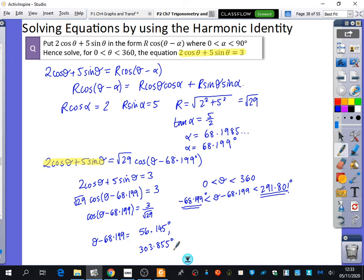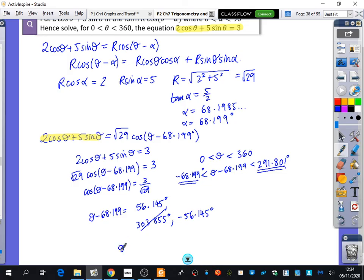And that doesn't fit inside the range. So what can I do to this one to make it fit inside the range? I'm going to minus 360 from it. Remember, you can minus 360 or add 360 to any of them. So I get minus 56.145 degrees. And then I've got that one that is inside the range. There's no point in adding 360 to this one because it would then go outside of the range. So I can use these ones that I've got here.